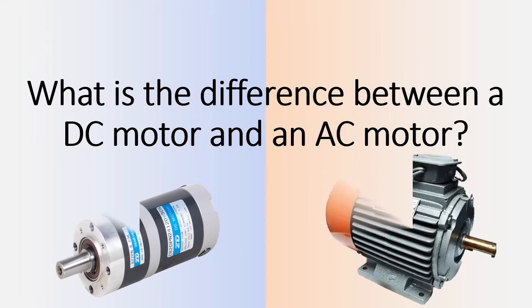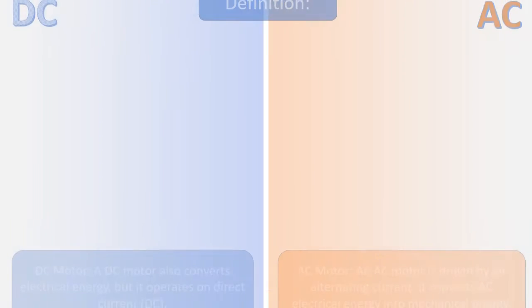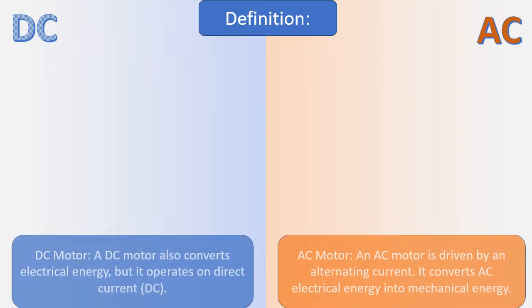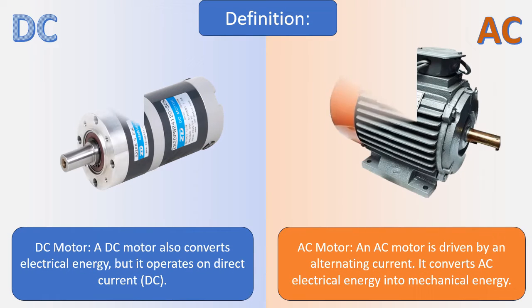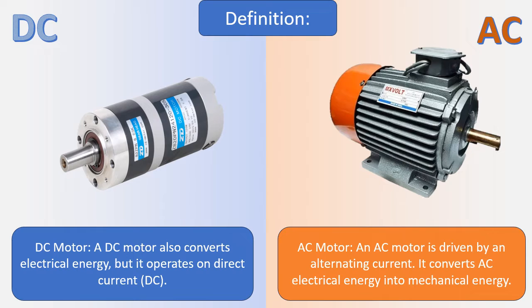What is the difference between a DC motor and an AC motor? An AC motor is driven by an alternating current. It converts AC electrical energy into mechanical energy.